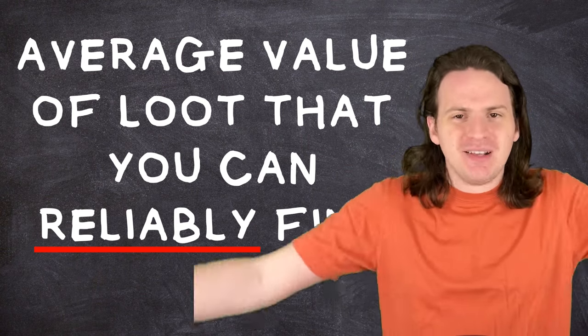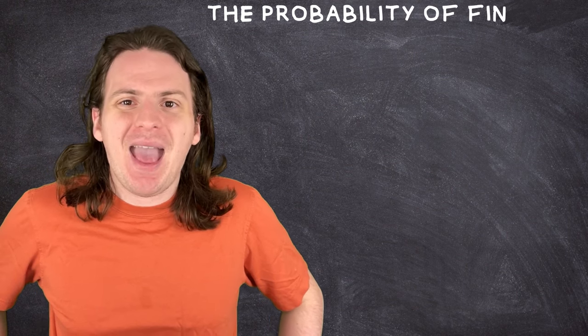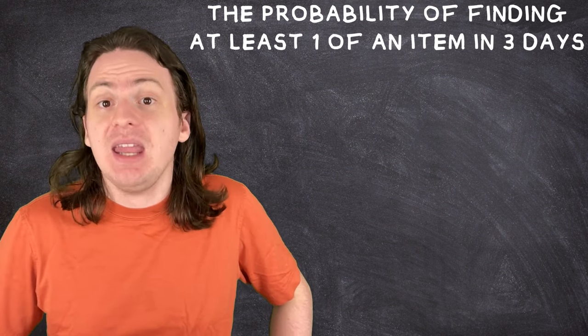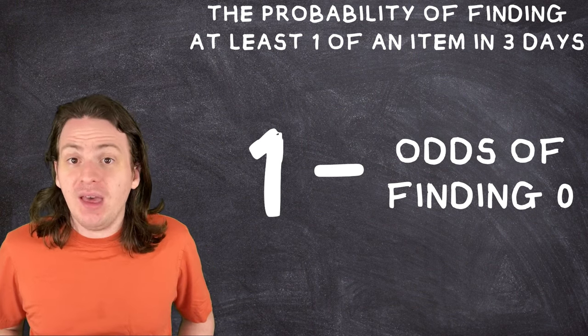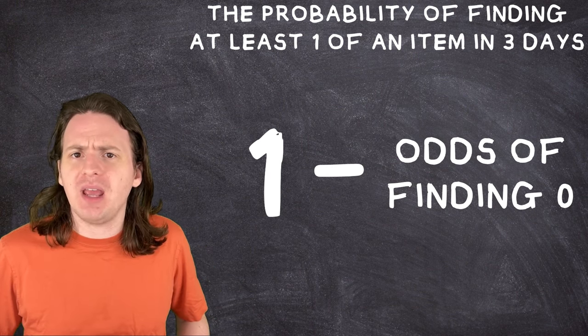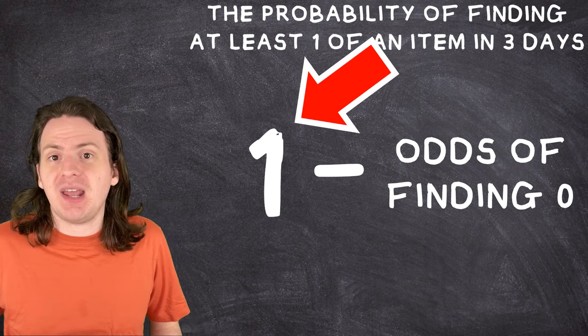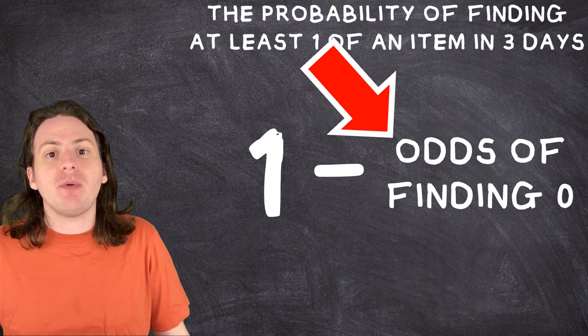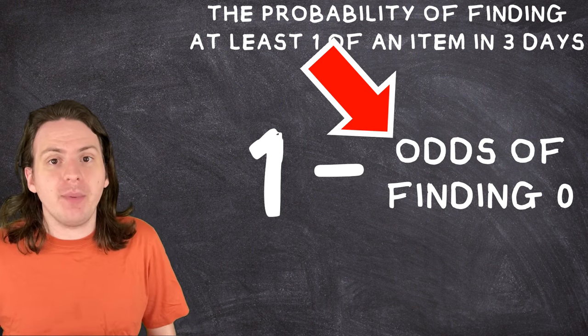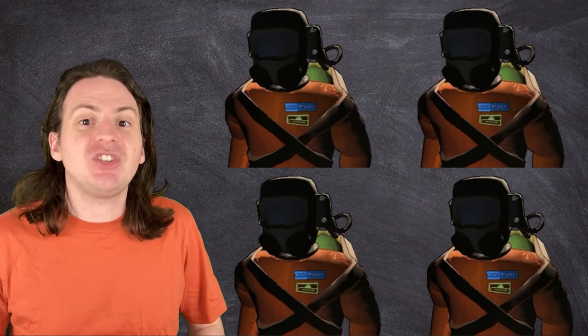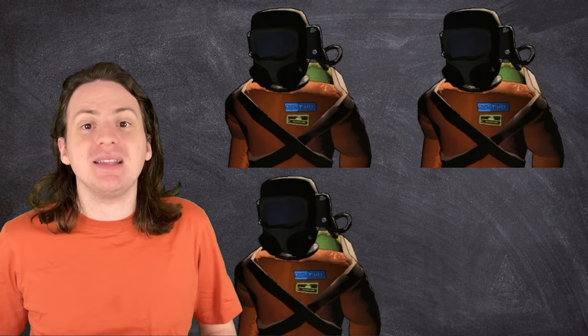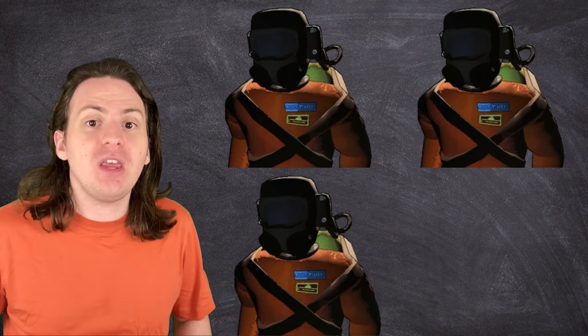So it's time to bust out some math. What we need is the probability of finding at least one of something in a cycle. To do this, we can simply do one minus the probability of not finding any of that thing. This actually works for anything when you're trying to find the probability of something happening at least once. One as a percentage is 100%, and if you subtract the probability of something not happening, then you're left with the probability of it happening, however many times that is. So for our specific case, let's define our setup a little more. Let's assume that you have a crew of four people.